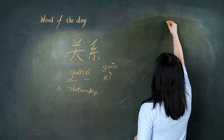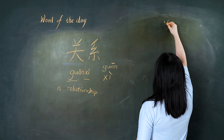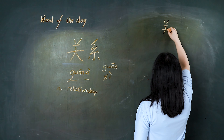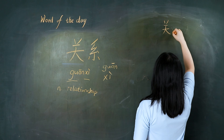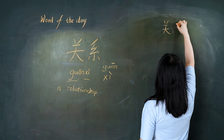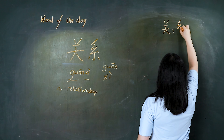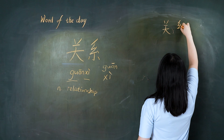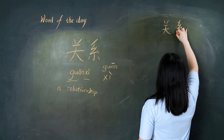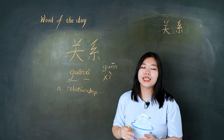First, we write 关: 点, 撇, 横, 横, 撇, 那. And we write 系: 撇, 撇折, 撇折, 点, 竖钩, 点, 点. 关系.